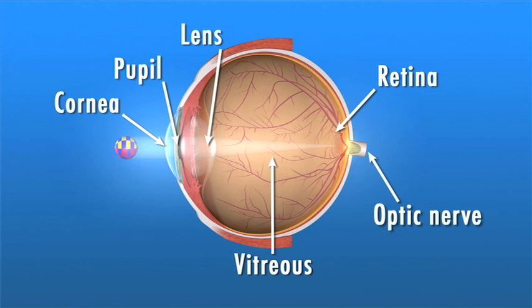70% of the eye's focusing power comes from the cornea and 30% from the lens. When we can't see clearly, it's often caused by a refractive error. There are four types of refractive error.